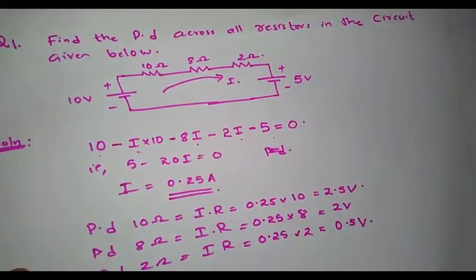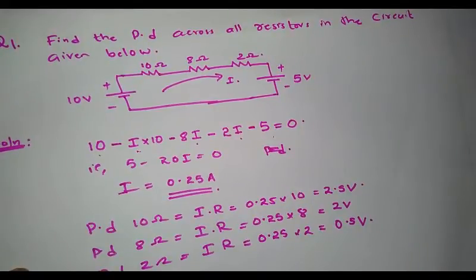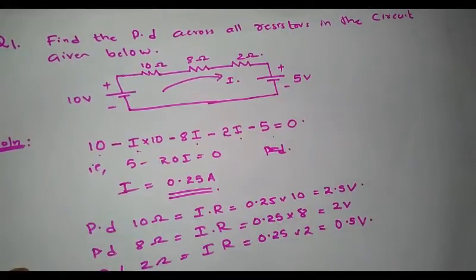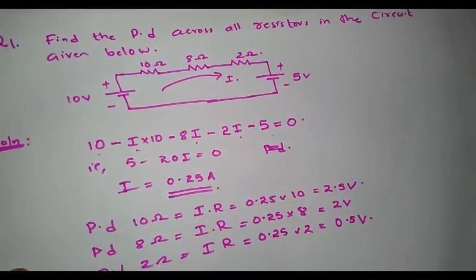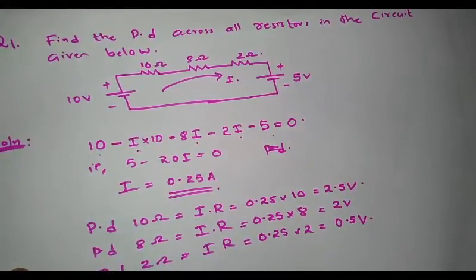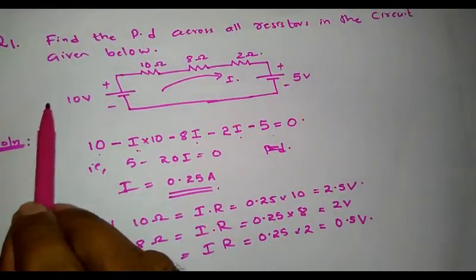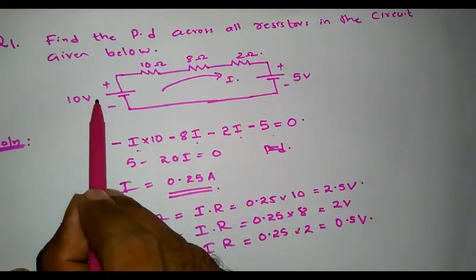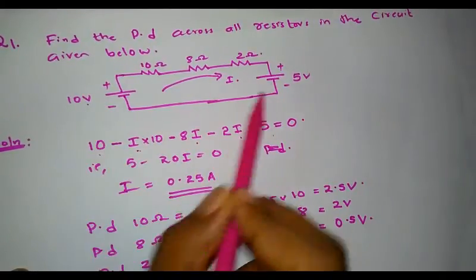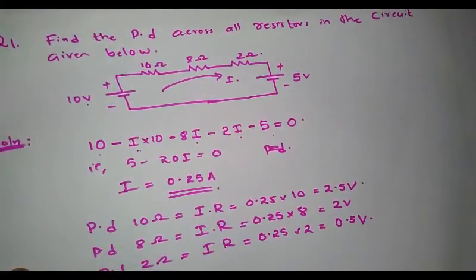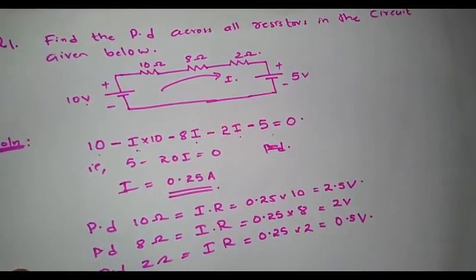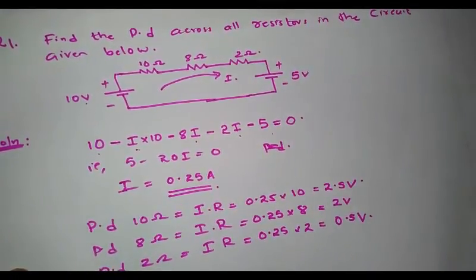These are the potential drops across all three resistors in the circuit. We can also verify Kirchhoff's voltage law: the algebraic sum of the potential drops = 2.5 + 2 + 0.5 = 5 volts. This equals the algebraic sum of the EMFs — 10 volt and 5 volt are connected in opposition, so 10 − 5 = 5 volts. Therefore 5 volts = 5 volts, and KVL is verified.